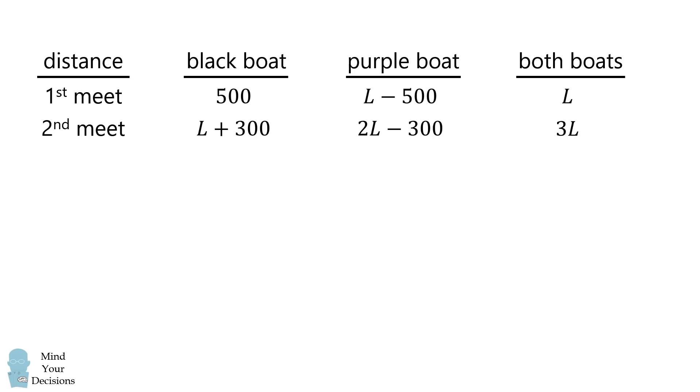The total distance traveled by the second meeting equals 3 times that traveled by the first meeting. Since each boat moves at constant speed, this must be true for each boat. So the second distance equals 3 times the first distance. Looking at the black boat: 3 times 500 equals L plus 300, which means 1500 equals L plus 300, so L equals 1200.